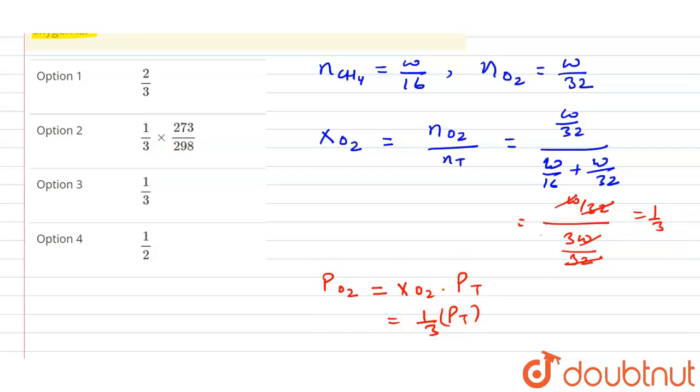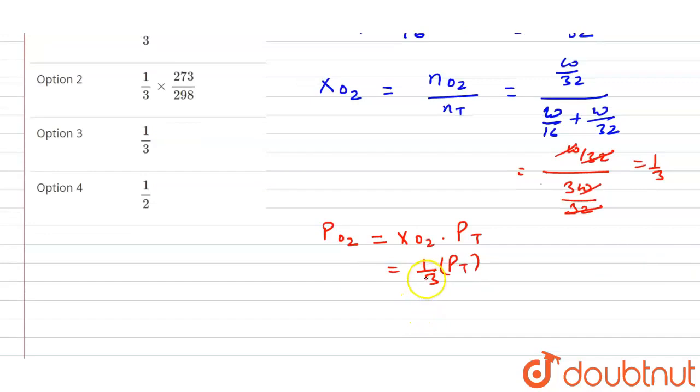So we can say this is one-third of the total pressure. So option 3 will be the right one. I hope you understand this concept. Thank you.